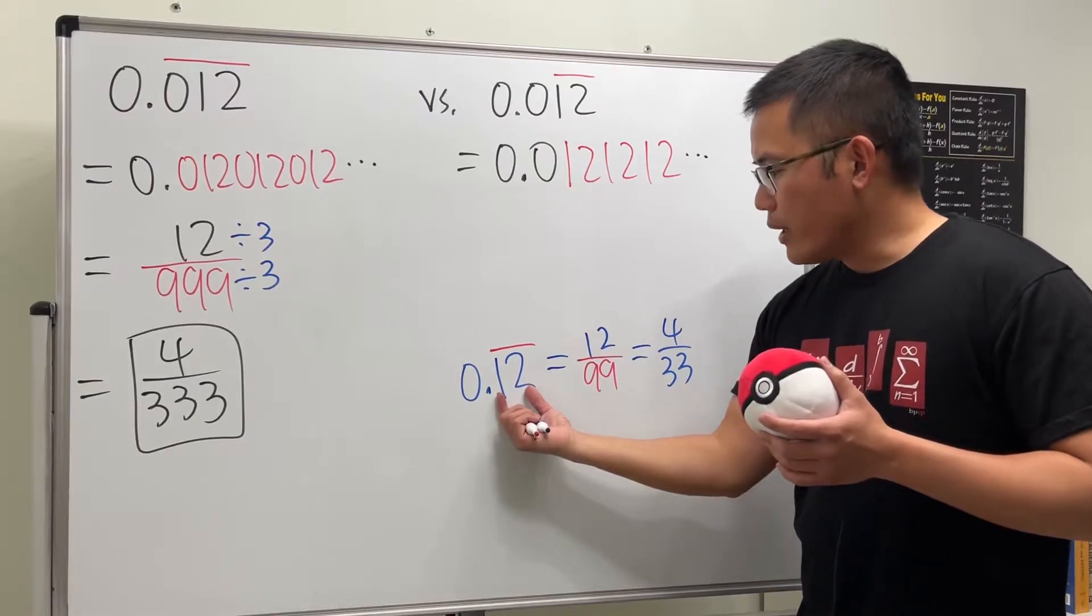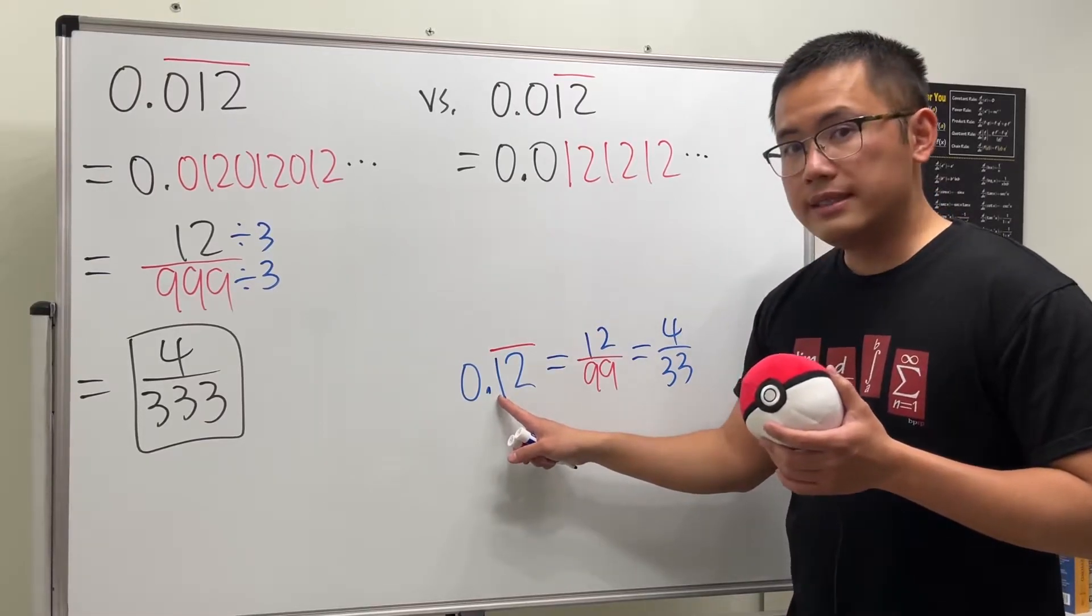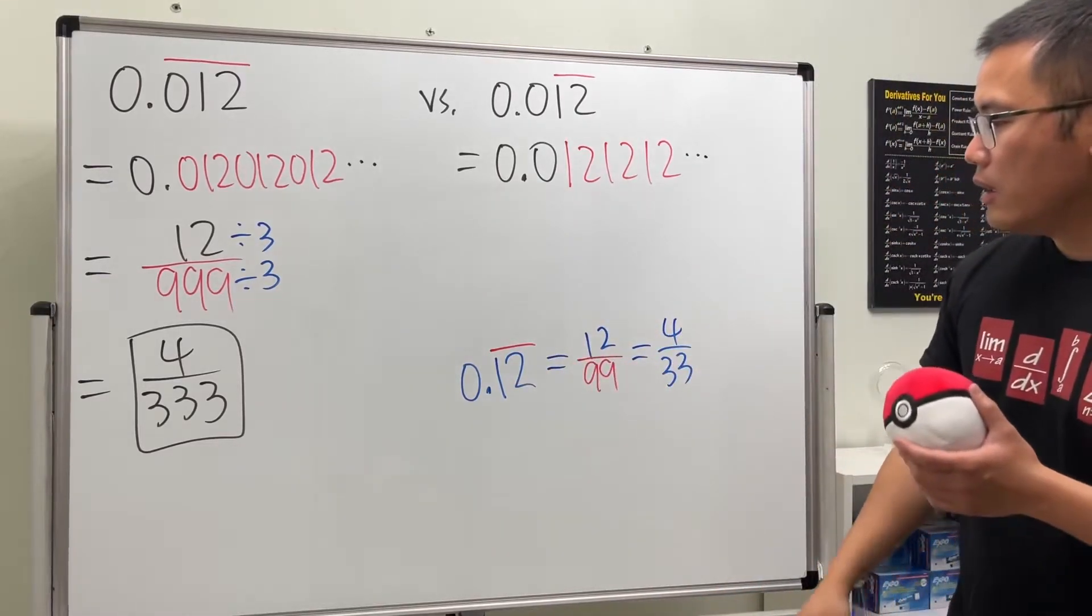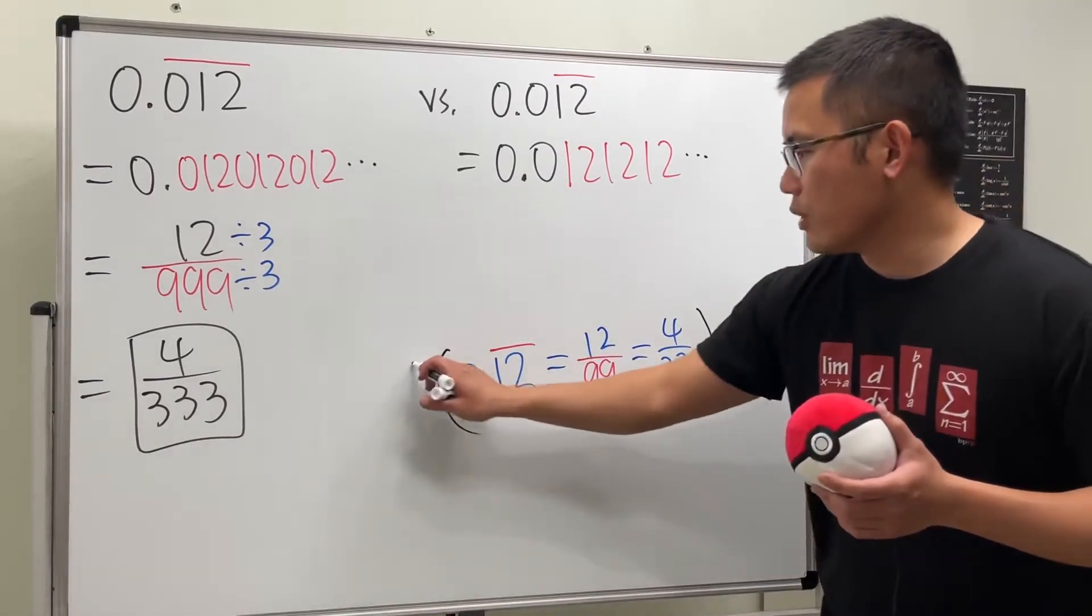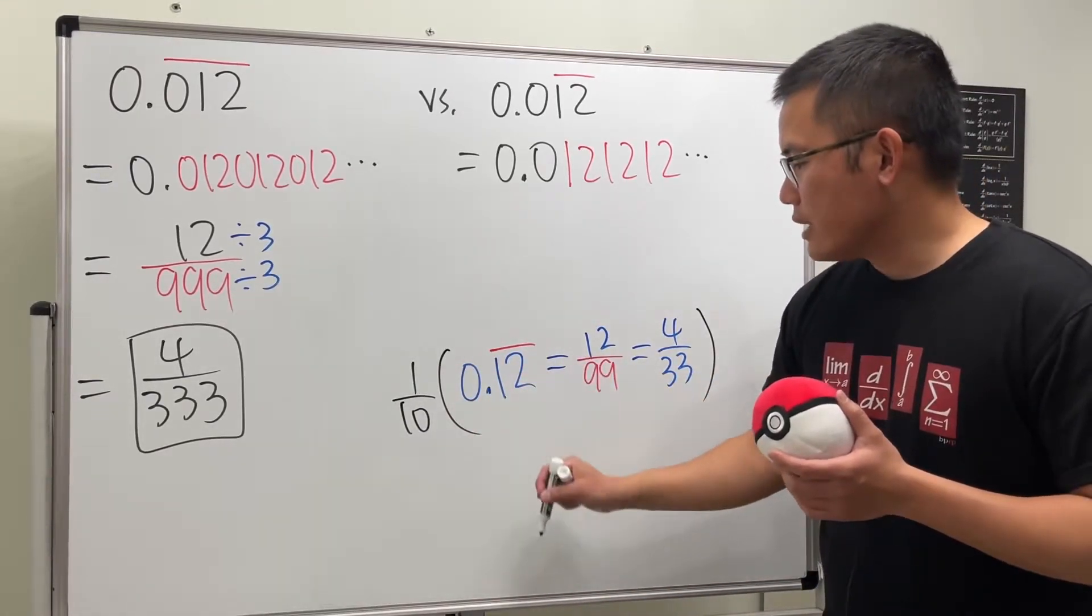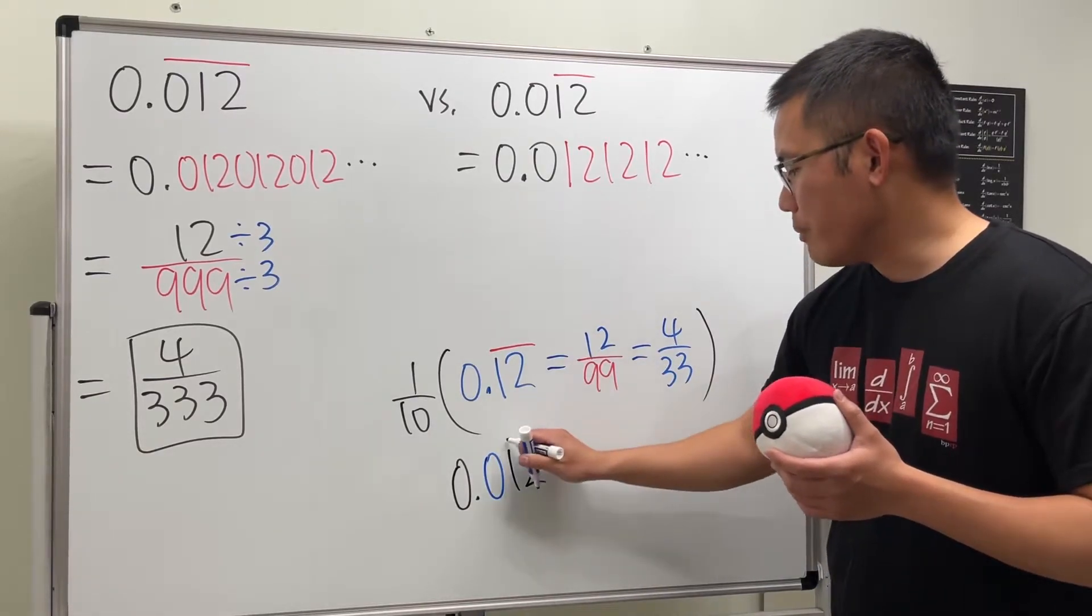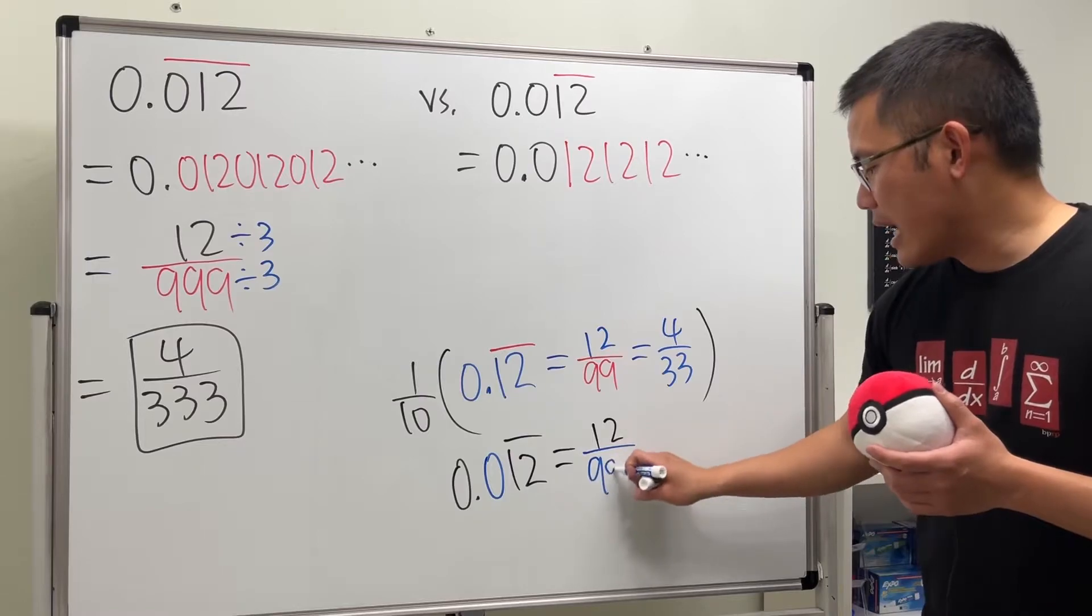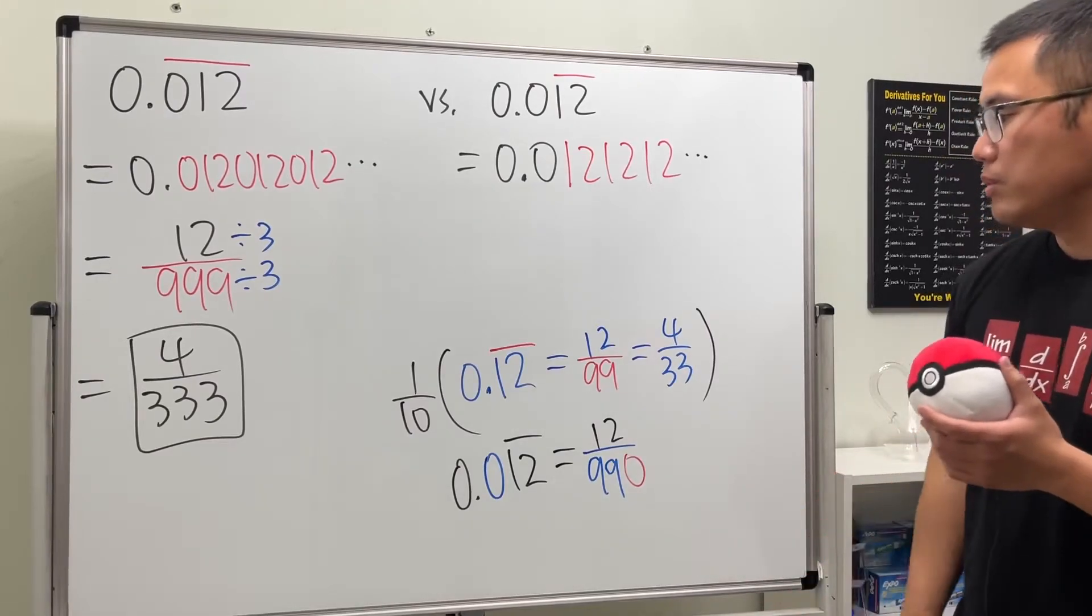Well, when you want to move the 1 and 2 to the next place, that means you divide it by 10. Because this 1 here is in the 10th place, but this 1 here is in the 100th place. So, you divide it by 10. So, what we can do is, we can actually just look at this and then divide it by 10. So, I will multiply it by 1 over 10. With that being said, we can see that 0.01̅2̅ is really the same as just 12 over 99, but then we divide it by 10. So, we will have to put down another 0 like that. So, that's pretty much the idea.